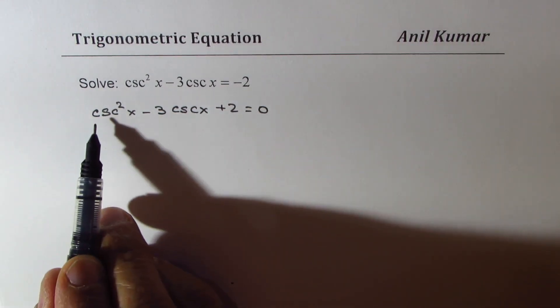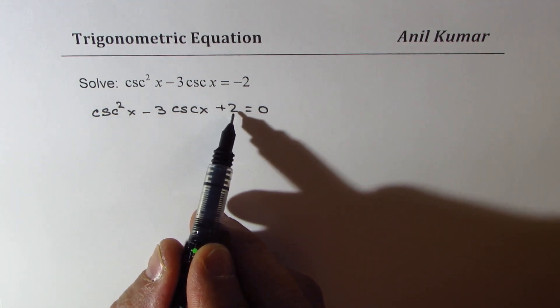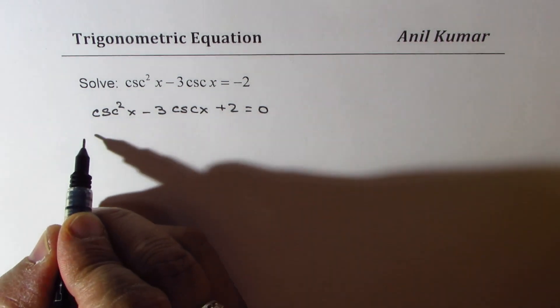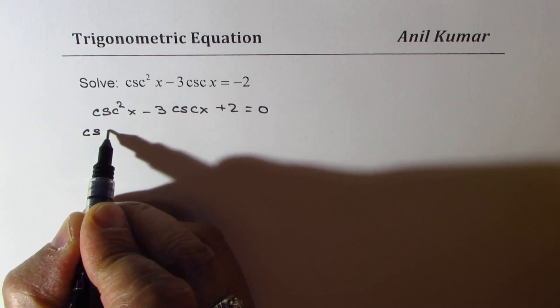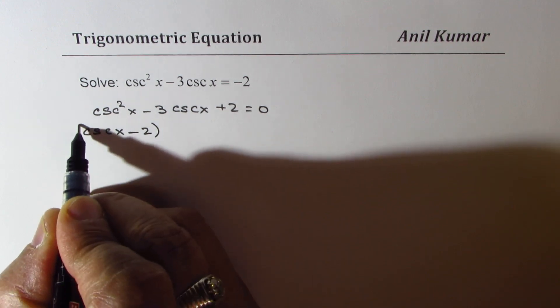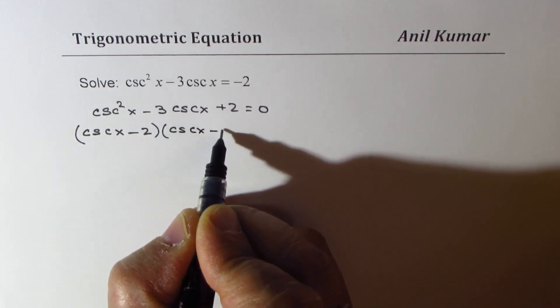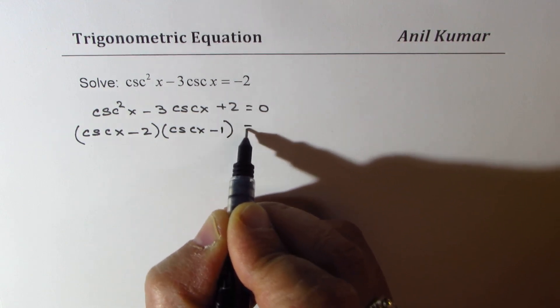Now this is a quadratic equation in cosecant. We can factor 2 times 1 both negative to give us the solution. So cosecant x minus 2 times cosecant x minus 1 equals 0.